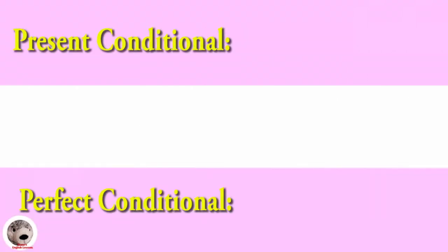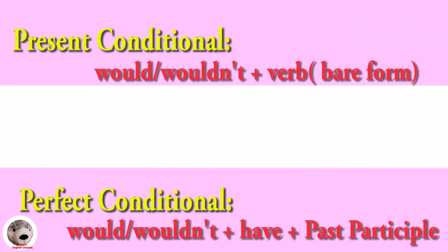Present Conditional: would or wouldn't plus verb bare form. Perfect Conditional: would or wouldn't plus have plus past participle.